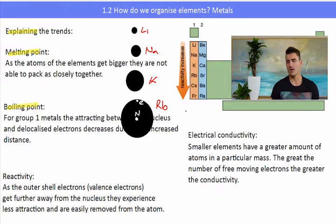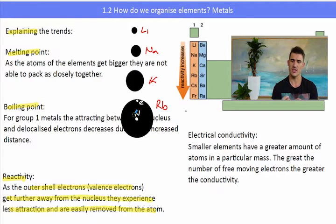The reactivity, well the reactivity also has to do with how far the electrons are away from the nucleus. So for lithium the electron, that one electron in the outer shell is pretty close to the nucleus compared to rubidium which is a long way away. It is easier for something to steal an electron that is further away from the nucleus than it is closer to the nucleus.